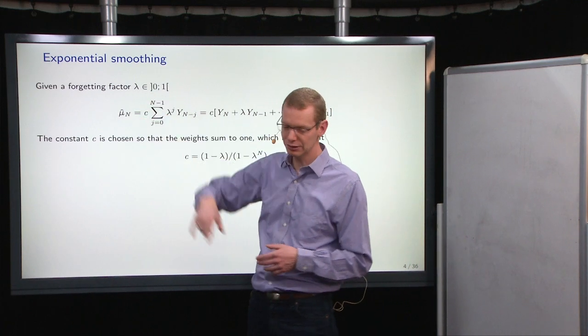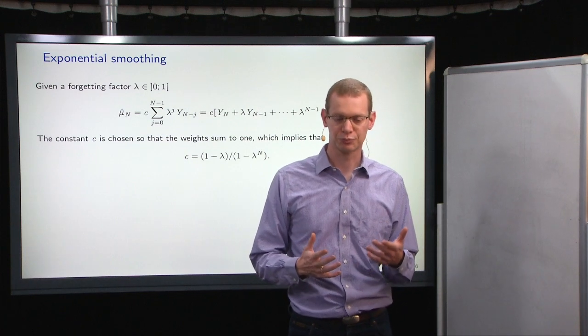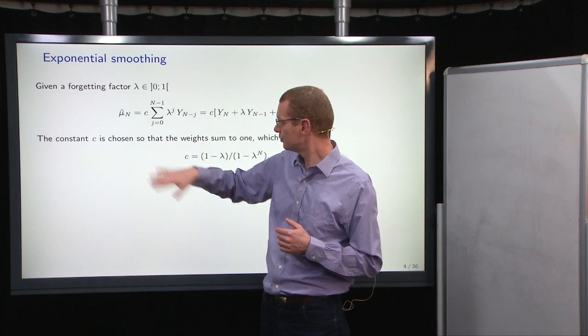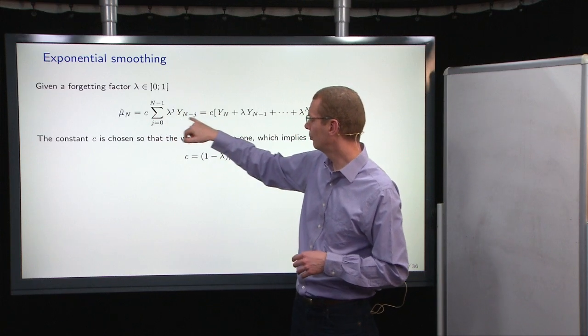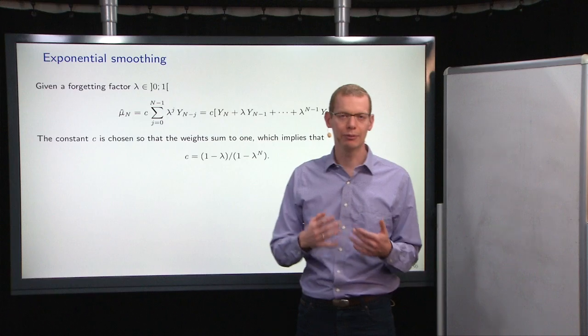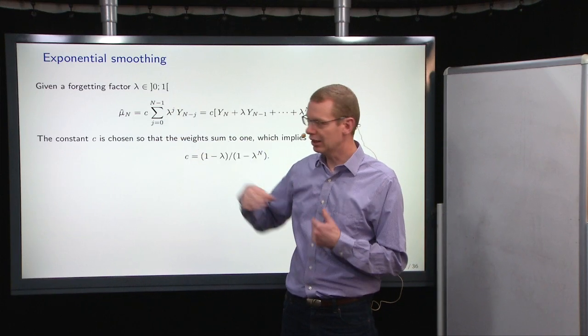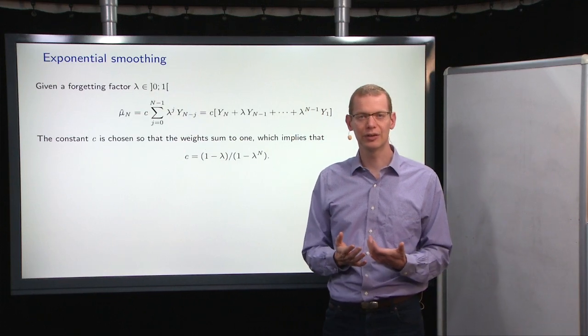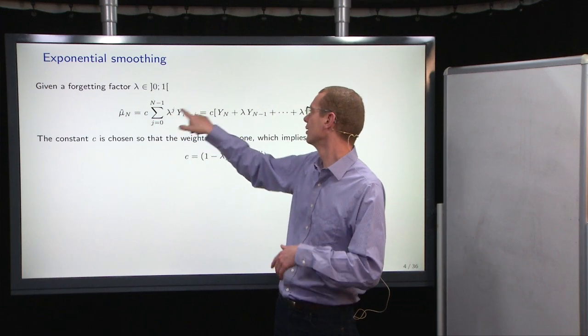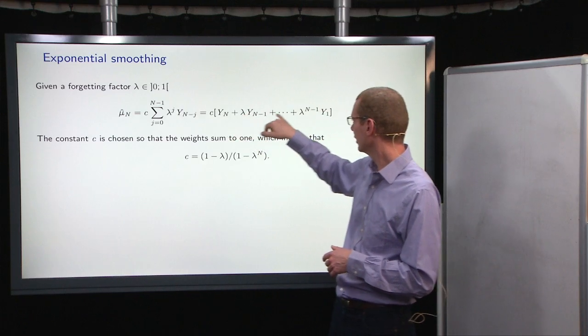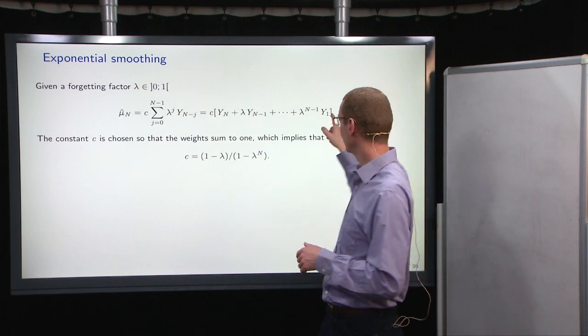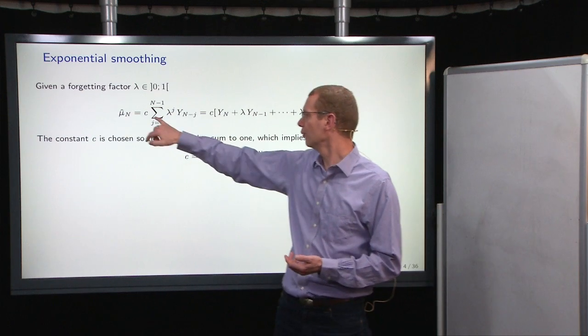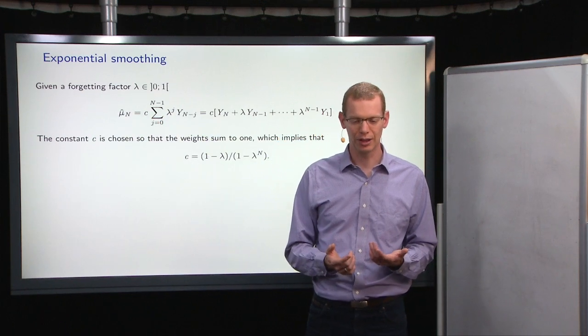What we'll do is that we use a forgetting factor lambda, that is numbered between zero and one. One means that we remember everything, and then we can estimate a mean value by making a weighted sum of all the previous observations, where the weight that we use here is lambda to the j power, and j is how many steps backwards in time is the observation that we're looking at. So that means that the most recent observation has weight one, and then lambda to the first power down to lambda to the n minus one power. Now, in order to calculate a mean value, we also need the sum of these weights to be one. To do that, we just calculate a constant that we pre-multiply on all these things.